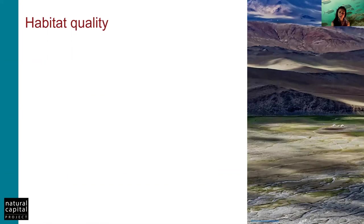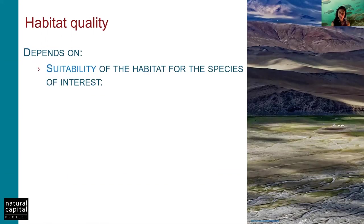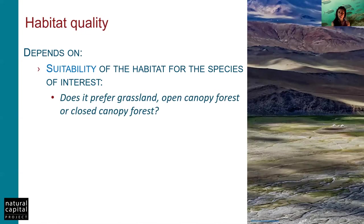The habitat quality model depends on habitat suitability for the species of interest, which can range from a single species such as a forest bird, a larger category like all mammals, or biodiversity in general — not being species specific. For instance, we can ask whether it prefers grassland, open canopy forest, or closed canopy forest. The model also depends on proximity and intensity of threats, represented by two major categories: habitat loss and habitat fragmentation.